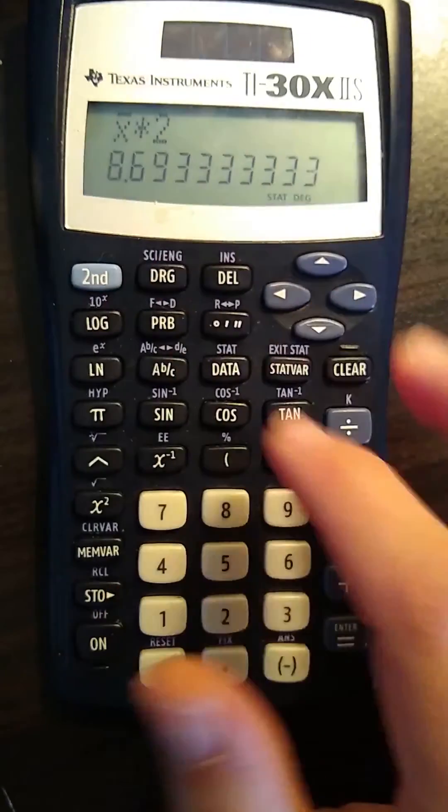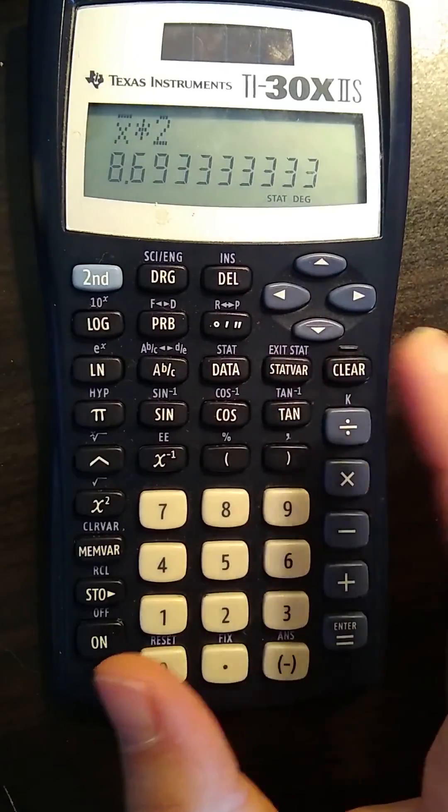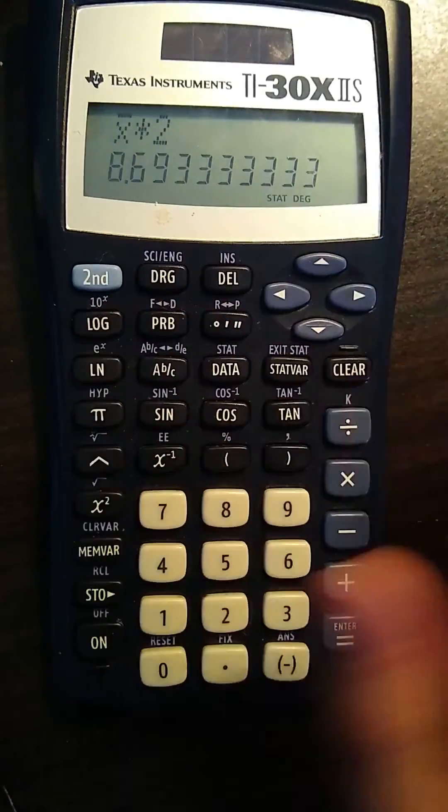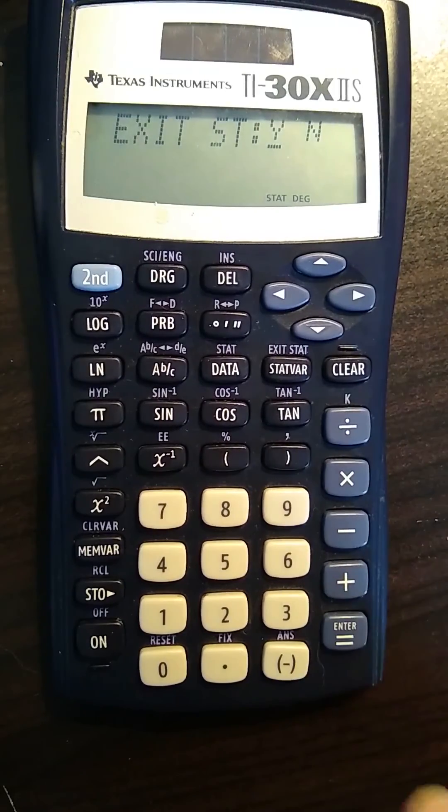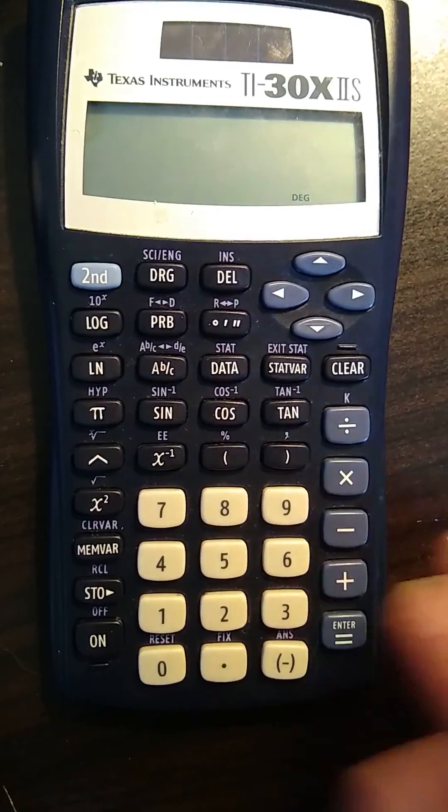Now if you want to go and change the data, you could go back and edit each little thing. If you want to completely wipe out the data set, you do second exit stat and then press enter and that clears everything out.